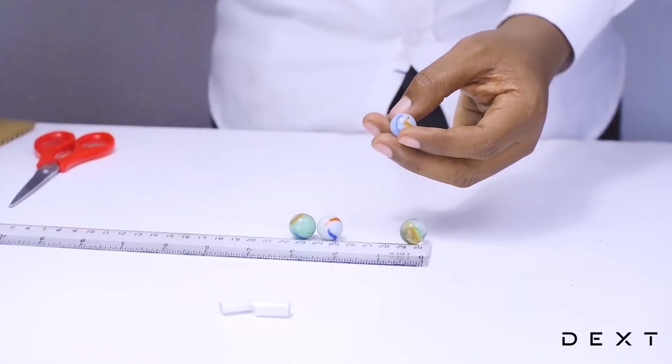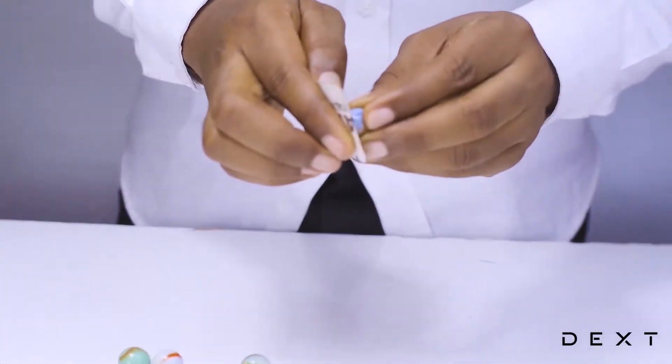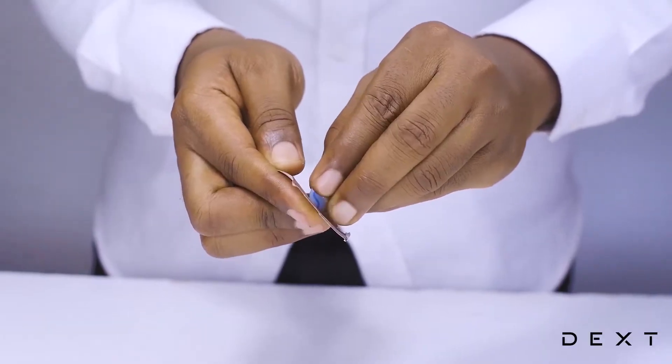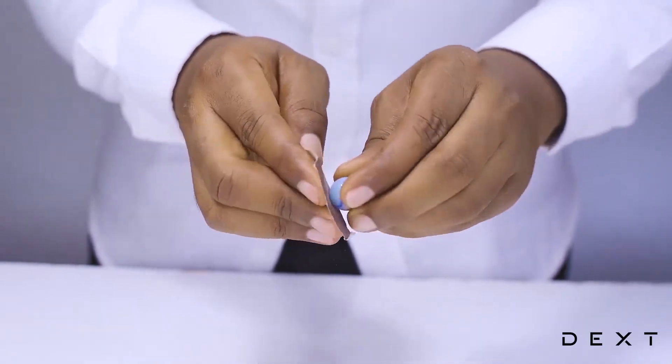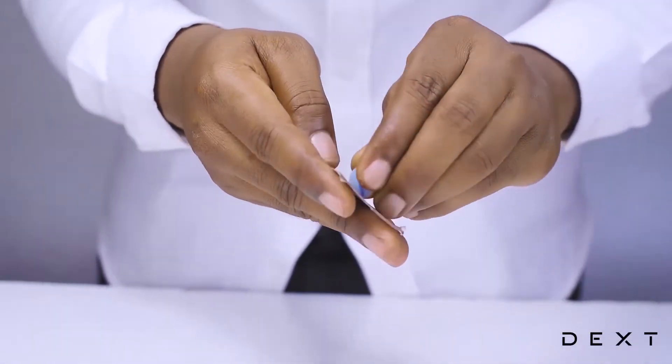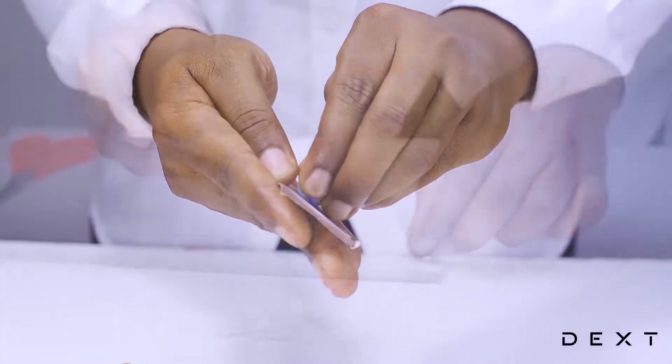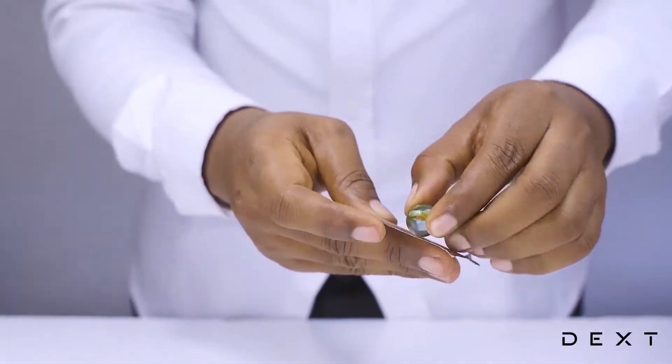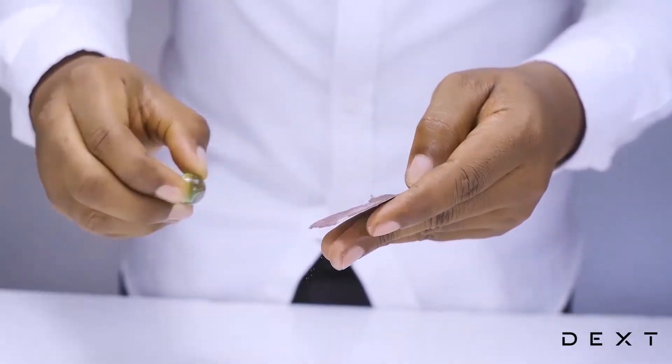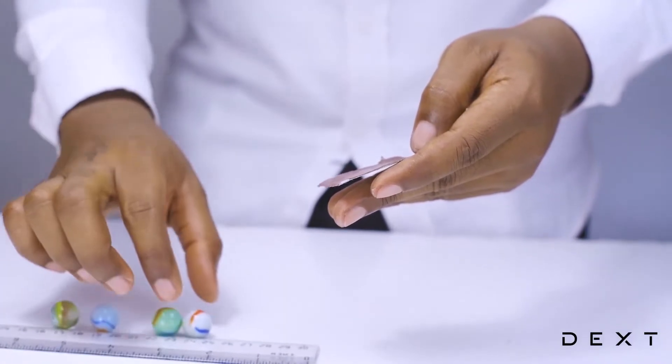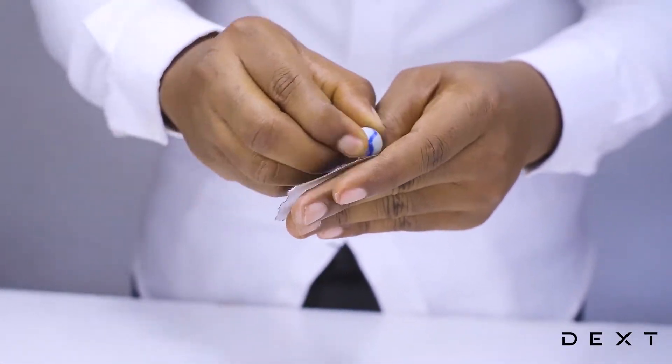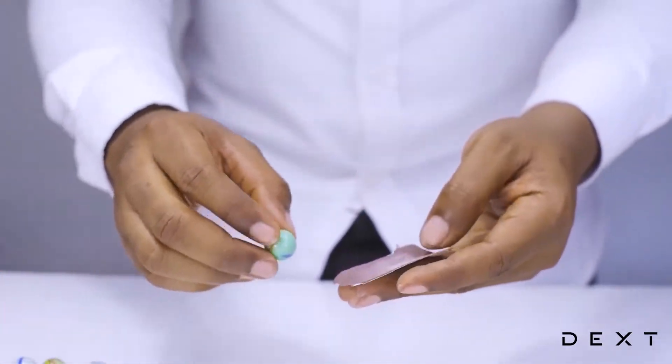We are going to do to our marbles just as we did while we built our pendulum. We are going to find a rough surface and create a rough portion on our marble where we are going to stick our double sided tape. We are going to do this for all 4 marbles. Create a rough point on the marble where we can attach our double sided tape.